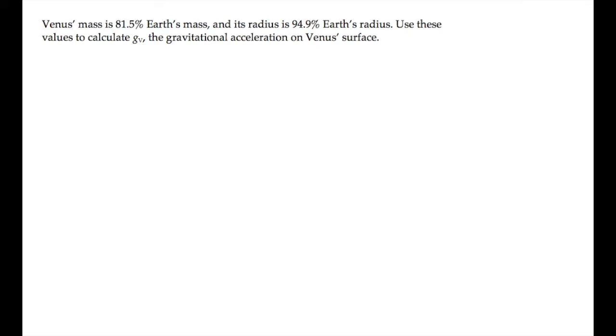The gravitational acceleration is the gravitational force per unit mass. So the surface acceleration on any planet P equals G times the mass of the planet divided by the radius of the planet squared.